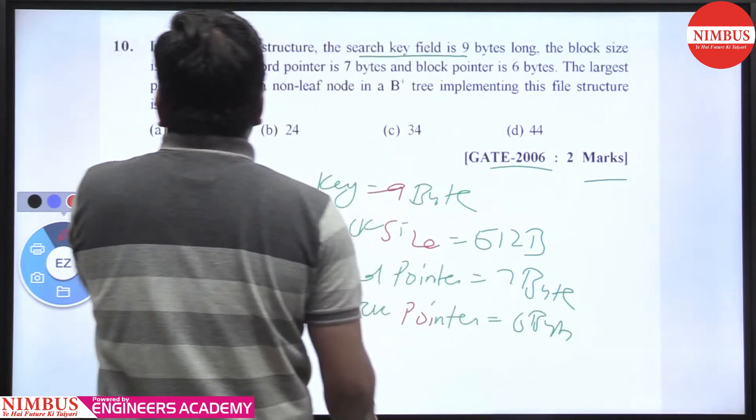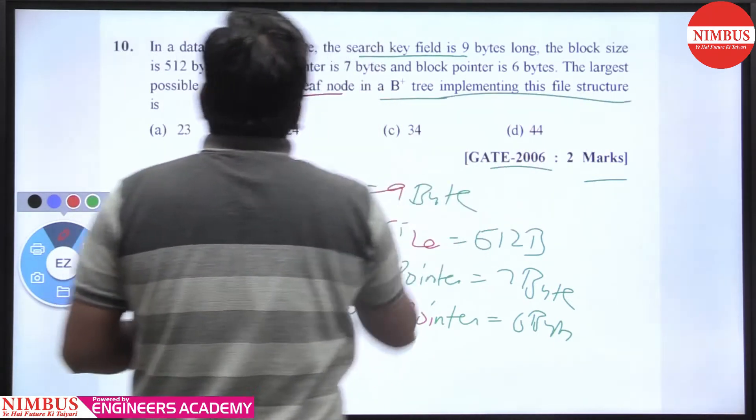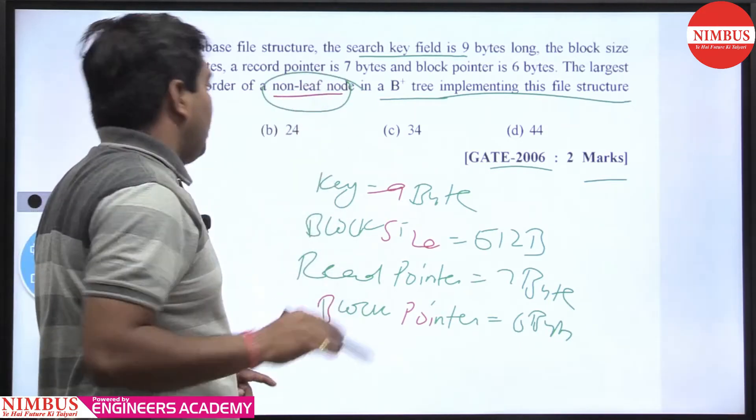Then what is the largest possible order of non-leaf node in a B+ tree implementing the file structure? In a B+ tree, he is asking about the non-leaf node, getting the point clear here.